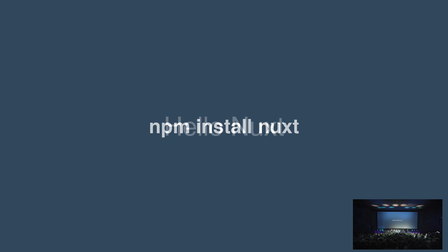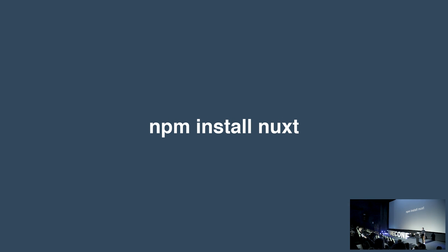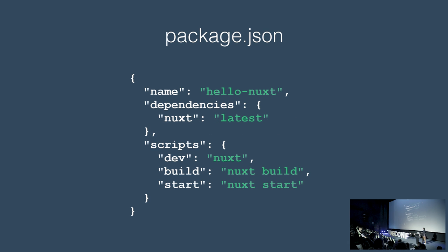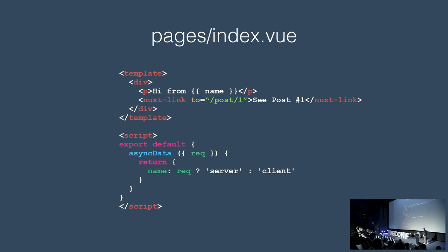Let's start with a quick example of how you can use it. First of all, just npm install Nuxt. You get your package.json with just one dependency, and you can add your scripts for the command line tools. In a simple page example, as I mentioned, we have the AsyncData function. We get the context from it — including the request, as you can see. If the request exists, we're on the server-side; if it doesn't, it's rendered from the client-side. The name variable is used like data — we merge data from AsyncData into the data method, so you can use it like a regular data variable.